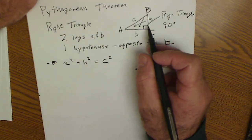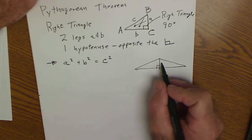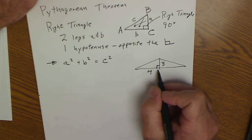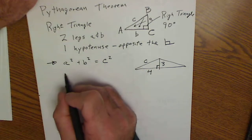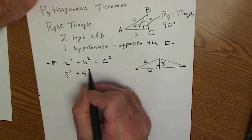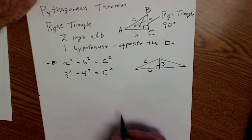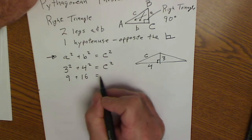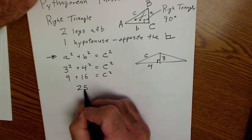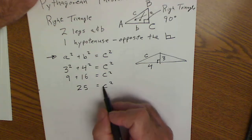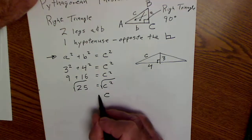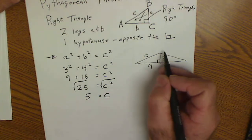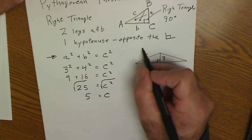Let's say in this case I know that this altitude is 3 and this leg right here is 4. I have a right triangle and I want to find C, the hypotenuse. I do one leg squared plus the other leg squared equals C squared. So 3 squared — 3 times 3 is 9 — plus 4 times 4 is 16, equals C squared. 16 plus 9 is 25, equals C squared. I take the square root of both sides and C equals 5 — not negative 5, because we're talking about a length. That's how you use the Pythagorean theorem to find the hypotenuse.